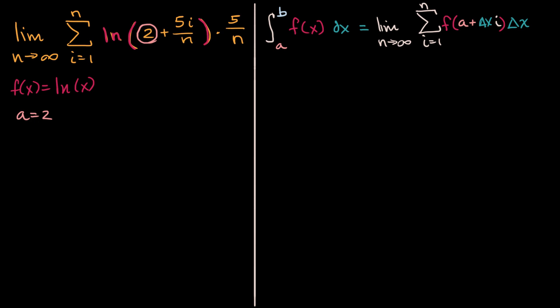What would our delta x be? Well, you can see this right over here, this thing that we're multiplying that just is divided by n, and it's not multiplying by an i. This looks like our delta x. And this right over here looks like delta x times i. So it looks like our delta x is equal to five over n.